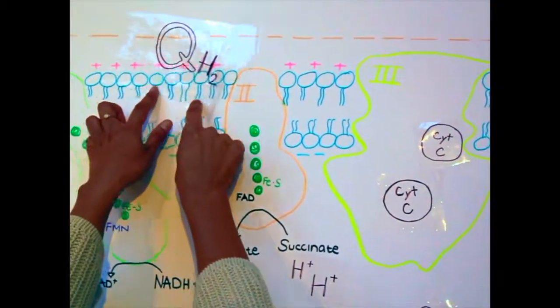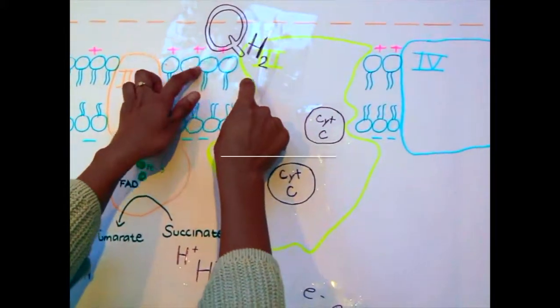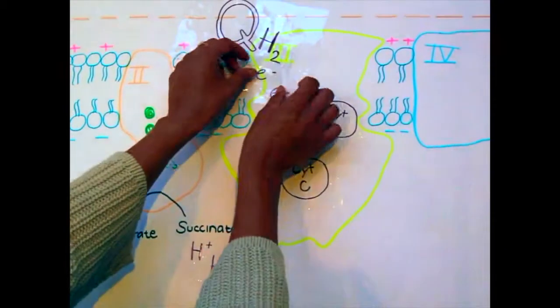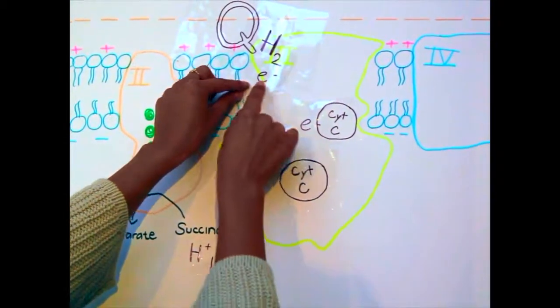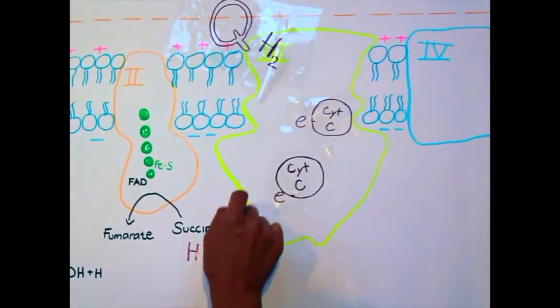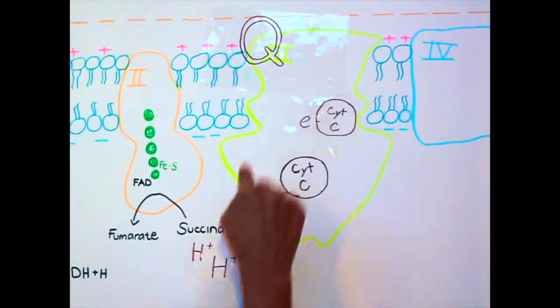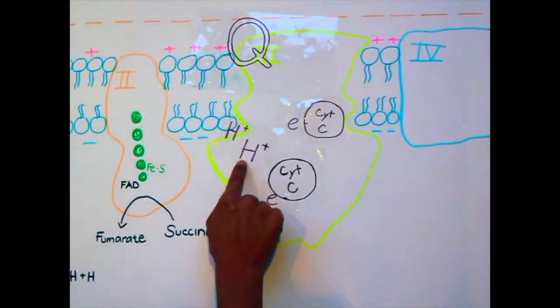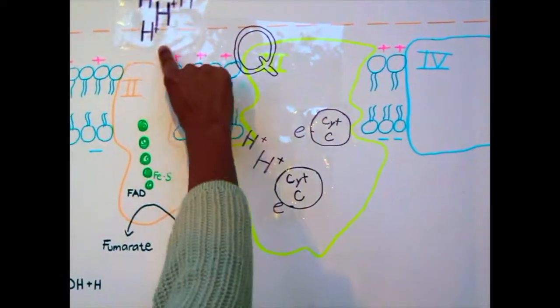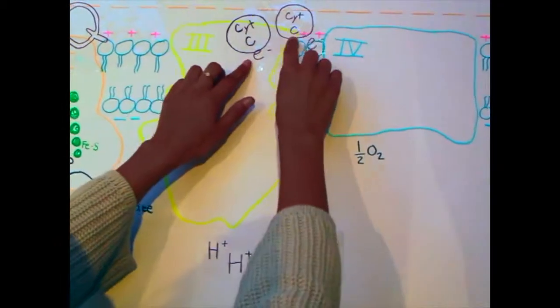QH2, coming from complex 1 or 2, will go to the binding site of complex 3, also called cytochrome C oxidoreductase. It will donate its 2 electrons, 1 each, to cytochrome C. Q goes back to its fully oxidized version. 2 protons will be used in this process. And 4 protons will be pumped out into the intermembrane space.